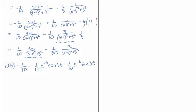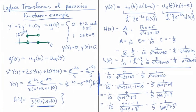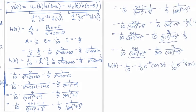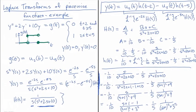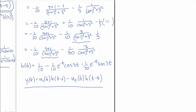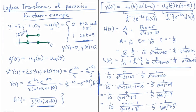Now we insert h of t back into our expression for y of t. The final solution is: y of t equals u sub 2 of t times h of t minus 2, minus u sub 5 of t times h of t minus 5. That is how to solve an ODE with a step function forcing inhomogeneity using the Laplace transform.